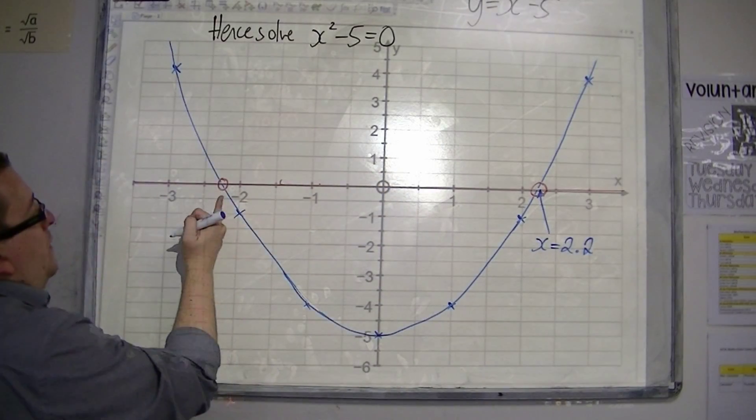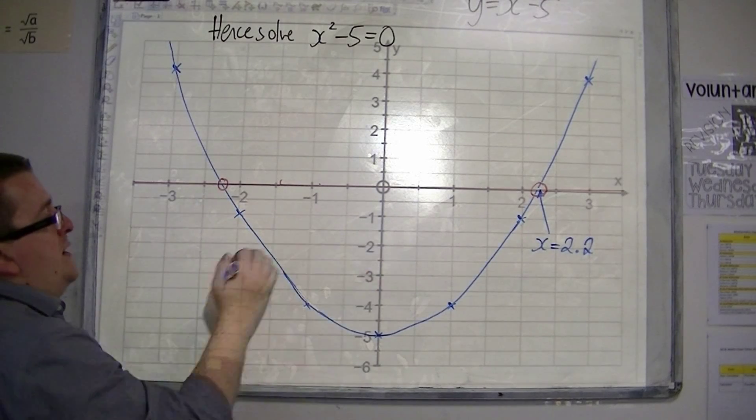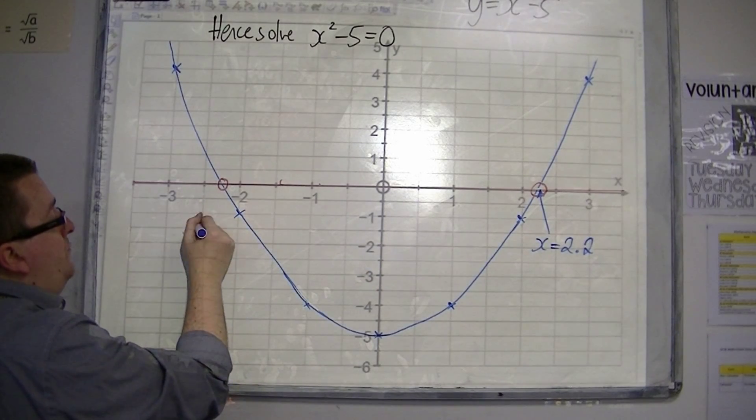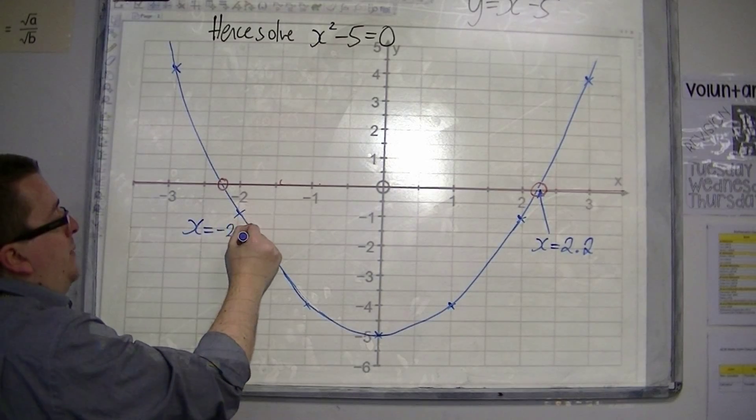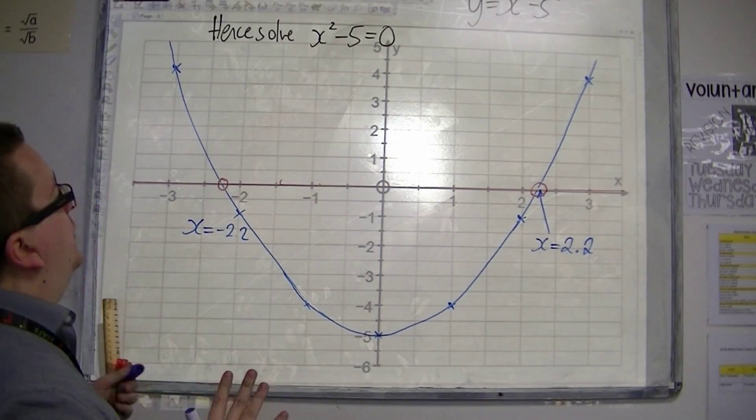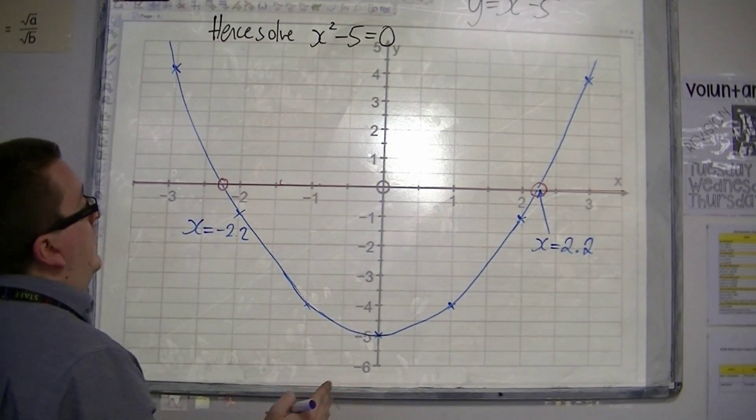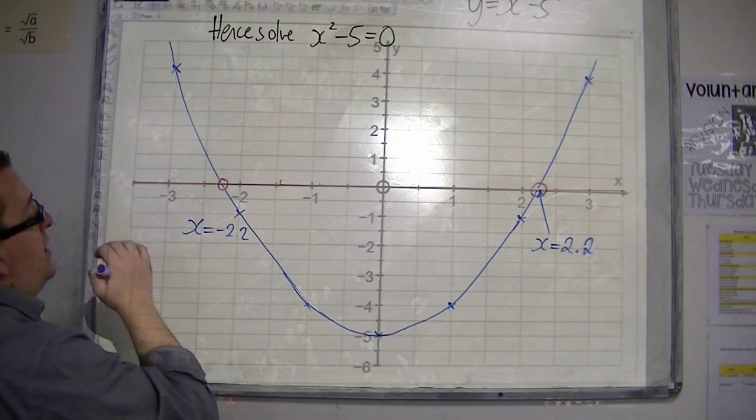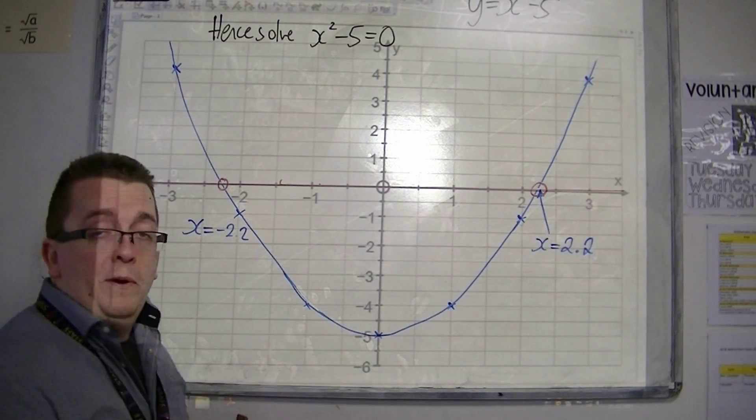And over here, I should have reasonably the same thing, but negative. Because we've got that symmetry, in this case, about the y-axis. So, 2.2 and minus 2.2. And that's my solution.